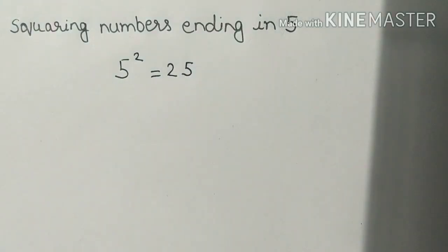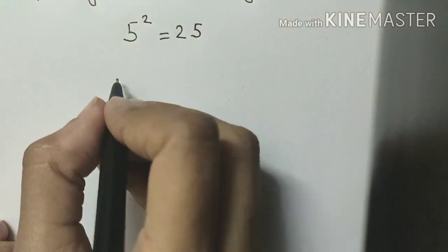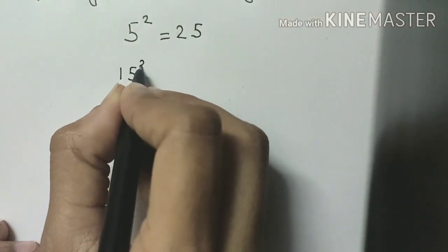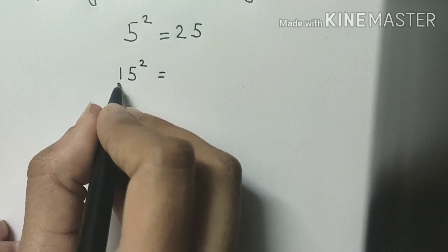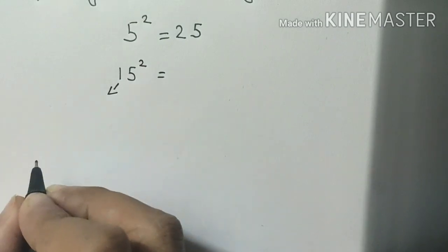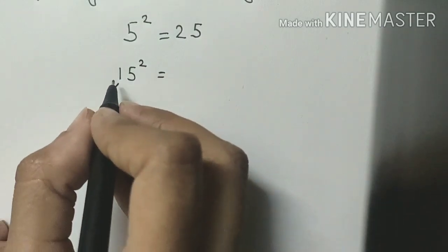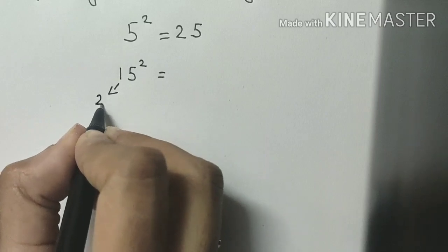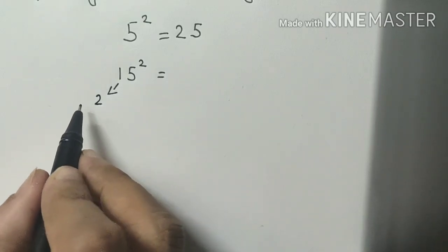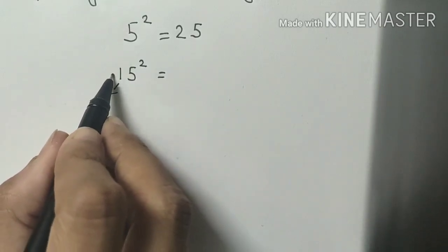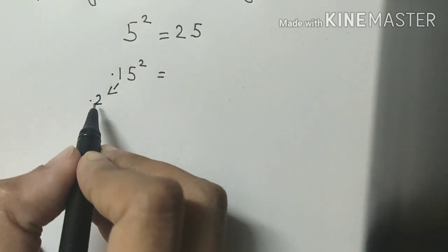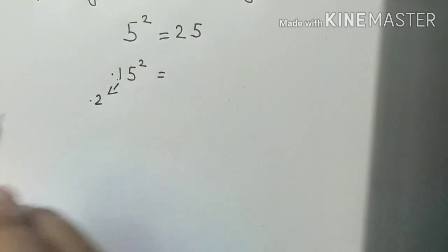Now let's calculate the square of 15. What comes after 1? Yes, after 1 comes 2. Now you will have to multiply this value with this value, means 2 × 1.